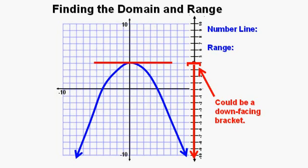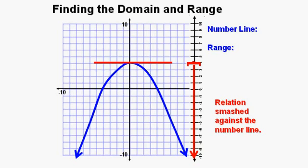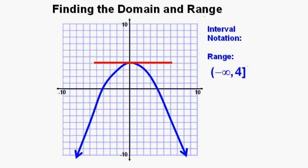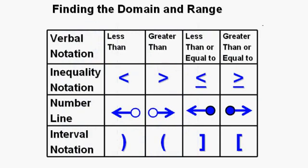In some places you might see a bracket instead of a point on a number line — a down-facing bracket to indicate the boundary is 4 and everything less than 4. Math is the same everywhere, but sometimes notation differs depending on where you are. We can smash the relation to the vertical number line parallel to the y-axis. As an inequality: y is less than or equal to 4. In set notation: y such that y is less than or equal to 4. In interval notation: open parentheses, negative infinity, comma, 4, then a closing bracket. A notation chart summarizes four of the five major domain and range notation formats — the only one missing is set notation, which is quite similar to inequality notation.